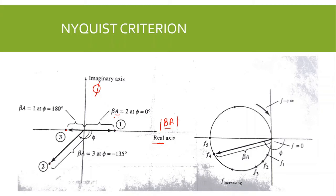For example, at point one we have the magnitude of beta-A equal to 2 and phase shift of 0 degrees. At point three, the magnitude of beta is equal to 1 and phase shift of 180 degrees. At point two, the magnitude of loop gain is equal to 3 and phase shift of 135 degrees. If the magnitude of loop gain and phase shift are plotted for increasing values of frequency, we obtain the Nyquist plot.